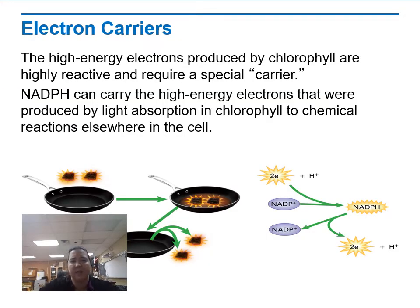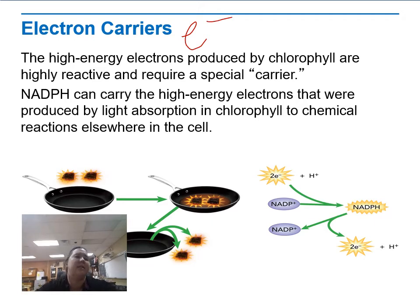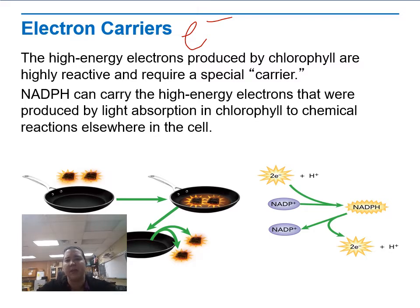Next, electron carriers. Electrons are negatively charged — they're the things participating in bonds and they carry energy. When we think about chemical reactions, electrons are all about energy. They actually require something to carry them.